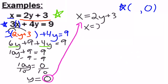So x equals 2 times 0 plus 3. And we just simplify from there. So x equals 2 times 0 is 0 plus 3 equals 3. So my x value is 3.